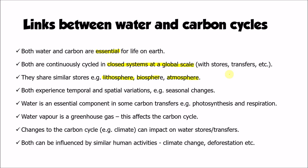Both of these cycles also experience changes over time. Seasonally, the water cycle and carbon cycle experience changes, and in the long term they experience dynamic equilibrium, if we factor out human activity. These cycles also experience spatial variations — for example, rates of evaporation or photosynthesis are much higher in areas with warmer climates such as the tropics.